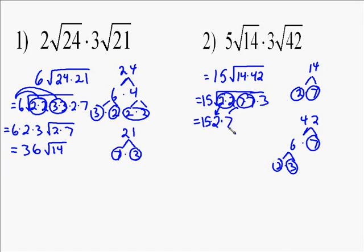What's left inside is the square root of 3. I multiply 15 times 2 times 7 and get 210. So my answer is 210 times the square root of 3.